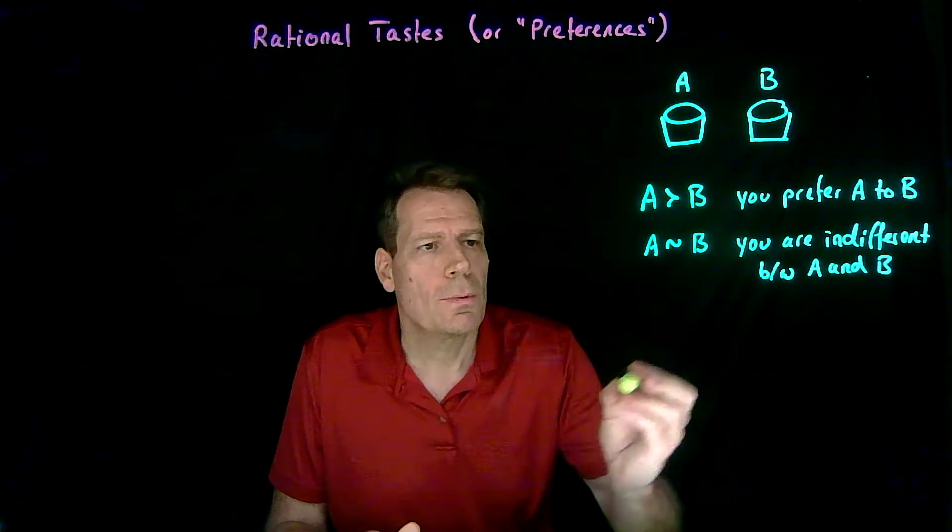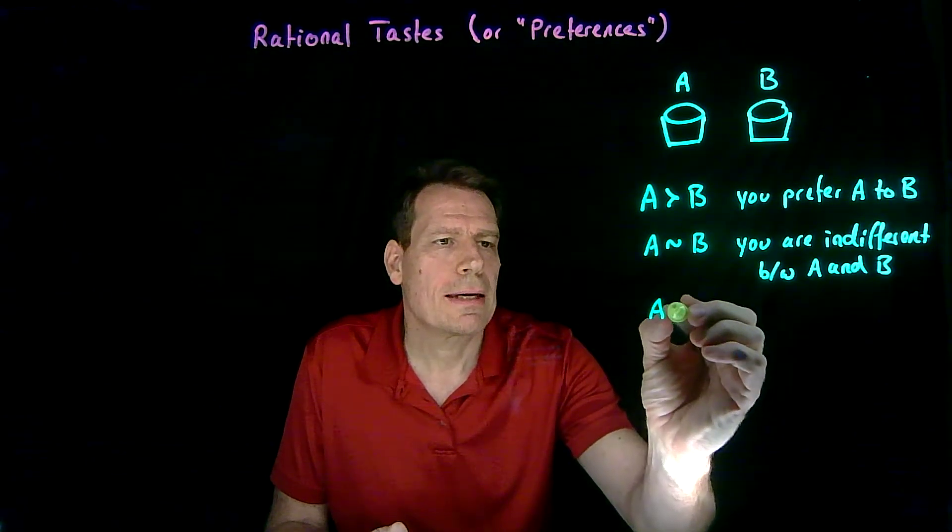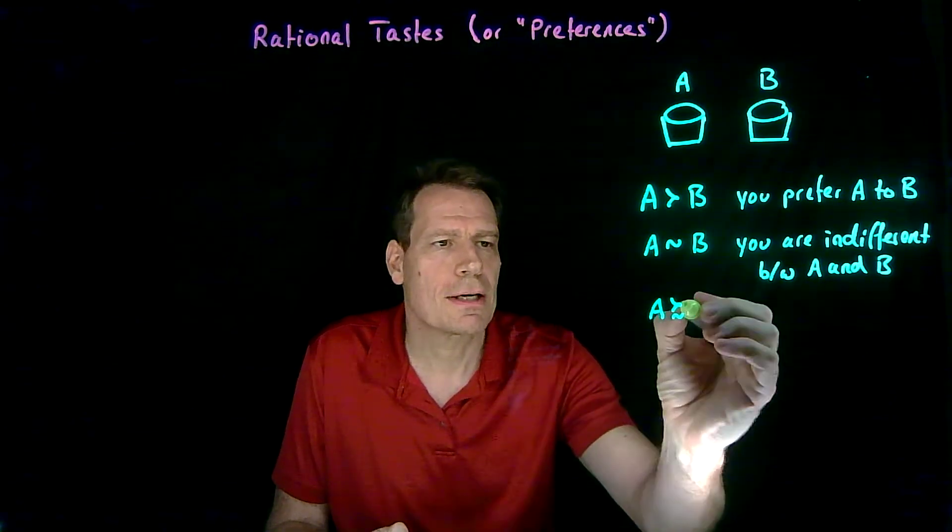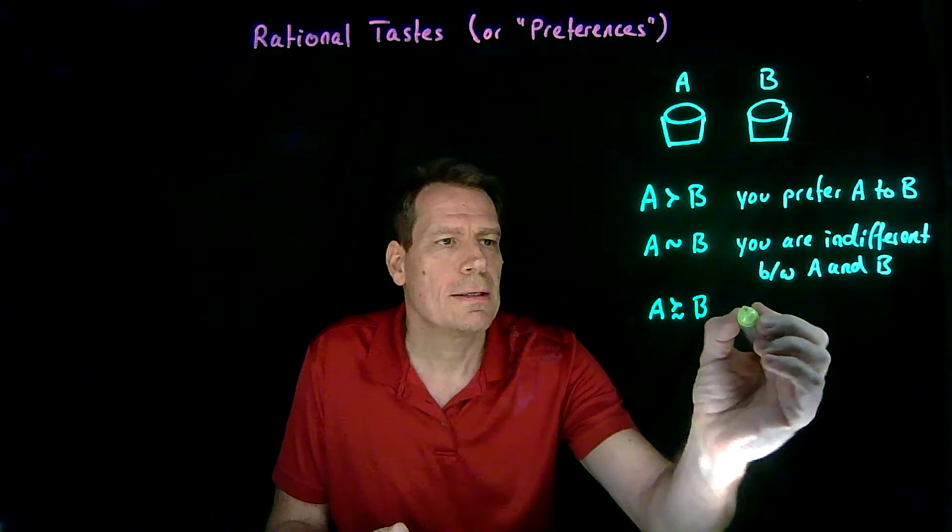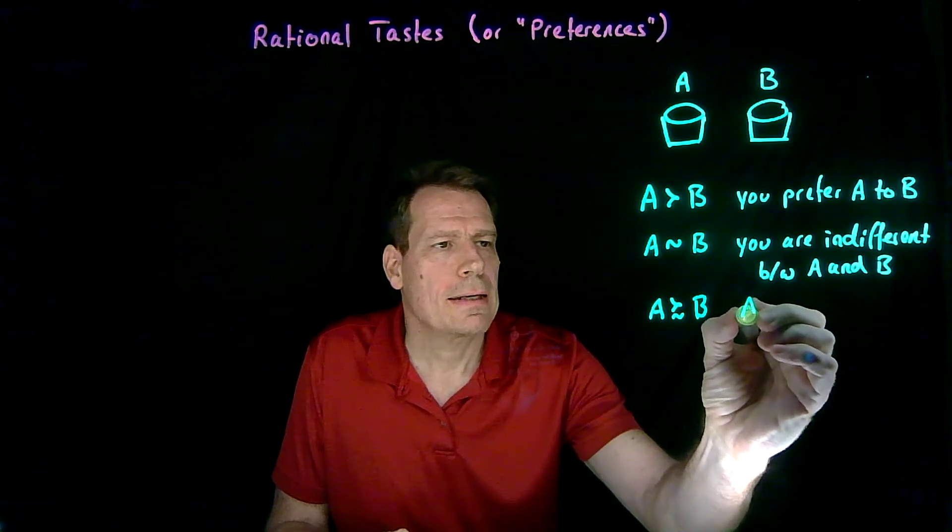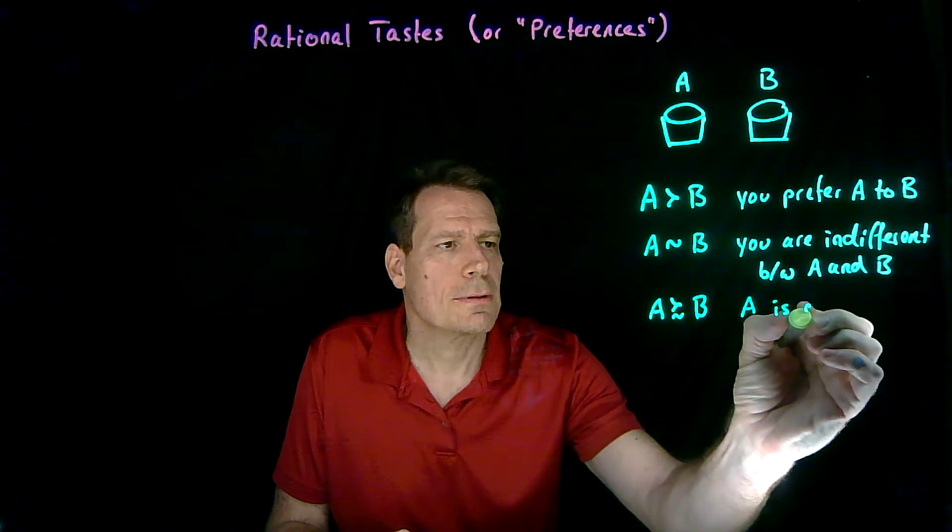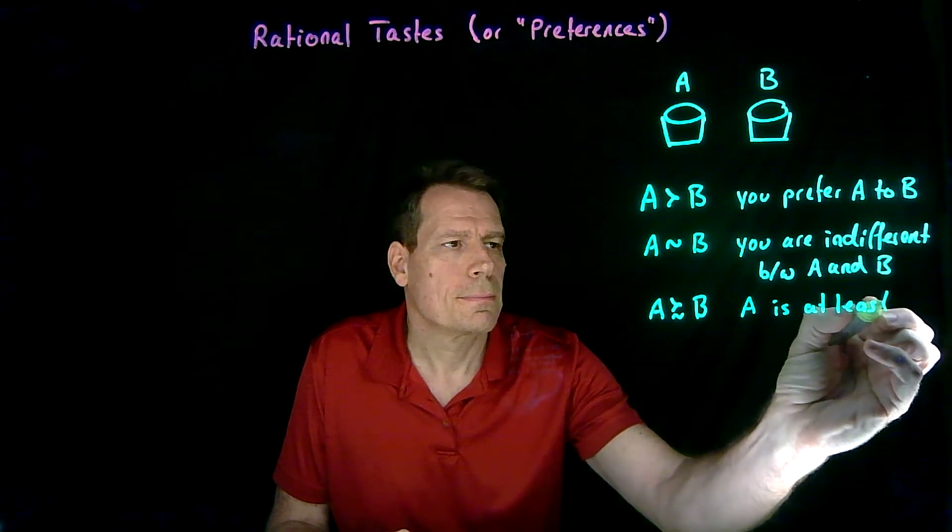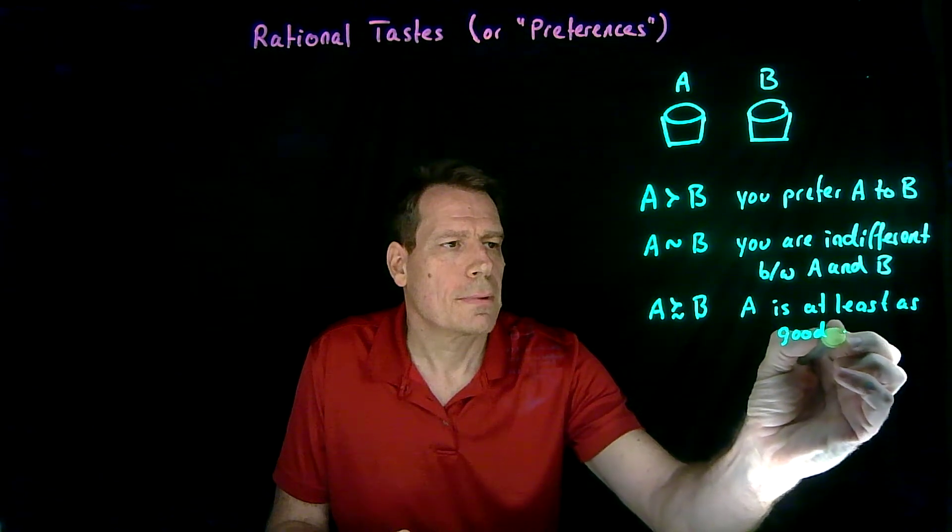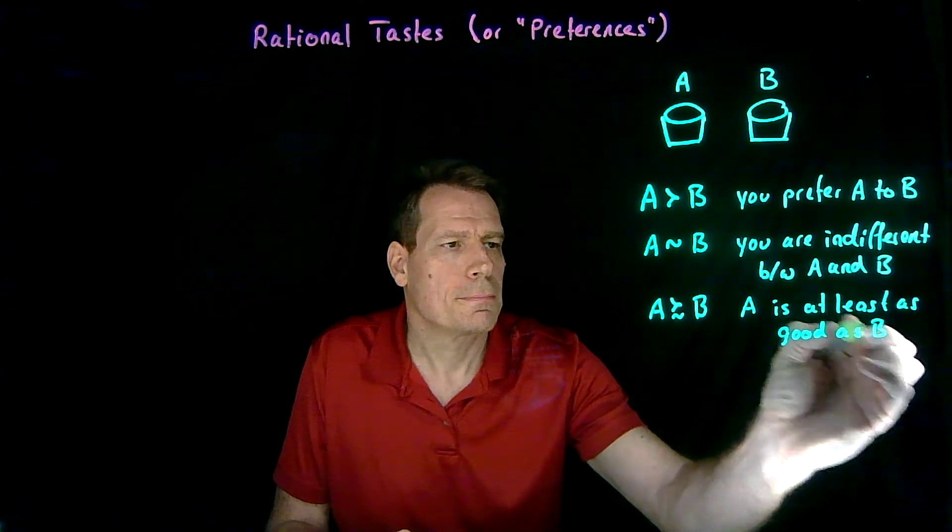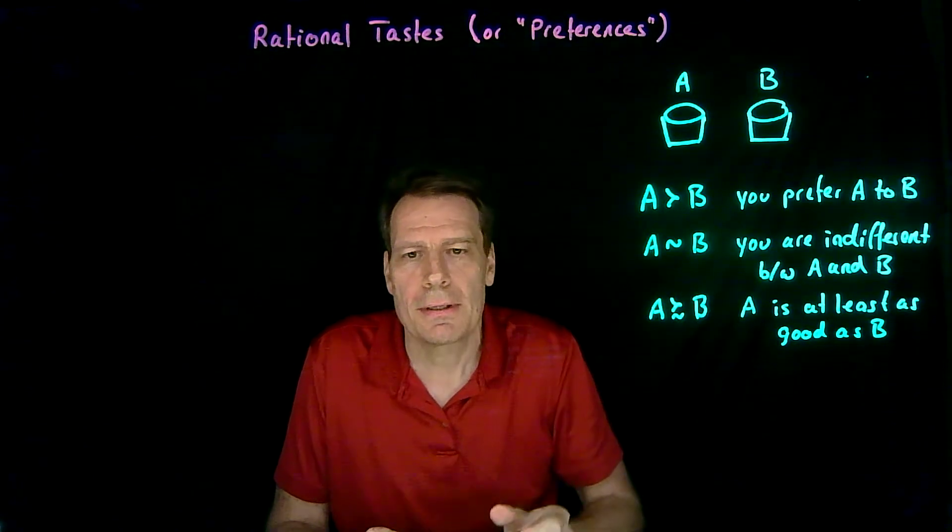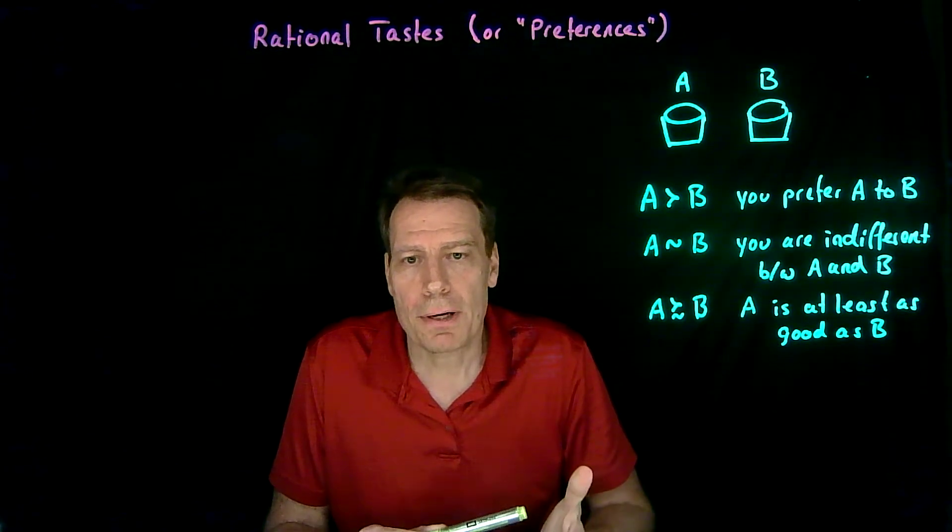And sometimes we're going to write A with this sort of squiggly greater than sign and the squiggly indifferent sign below to B, and we're going to interpret that as A is at least as good as B. So that's some notation about how we talk about preferences.